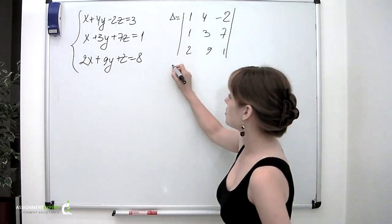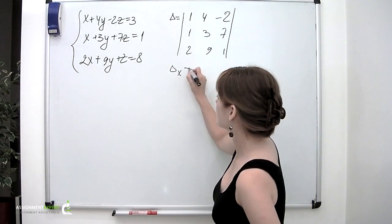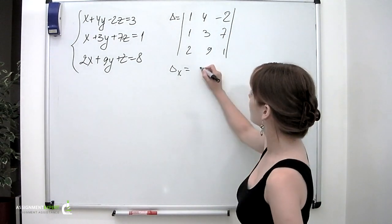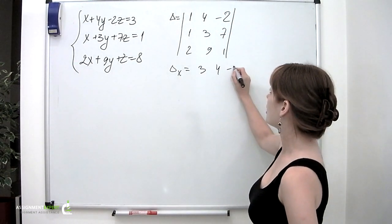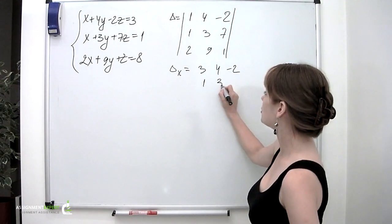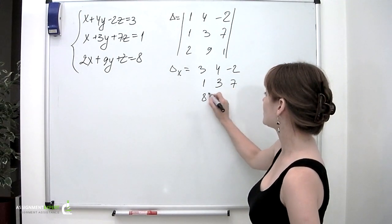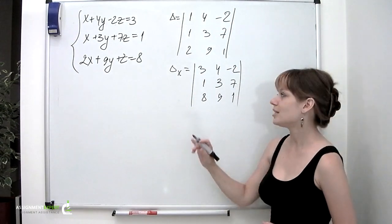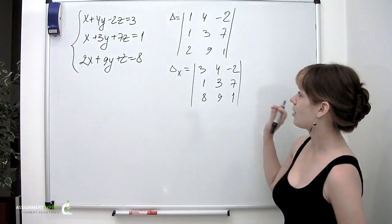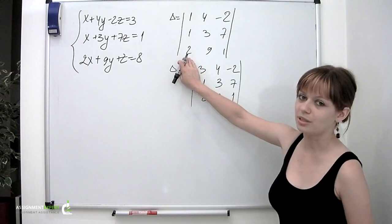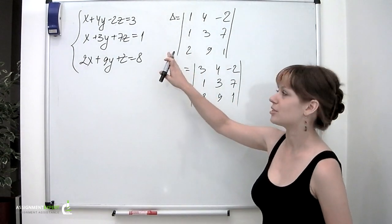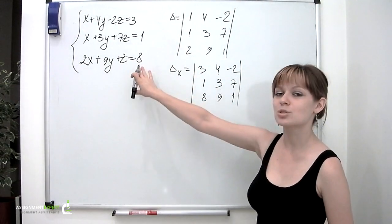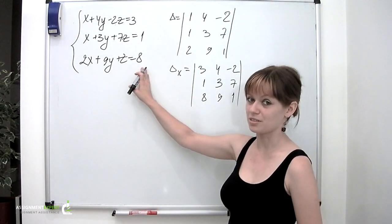Let delta_x be the determinant formed by replacing the first column of delta with the column of constants from the right side of our system. Delta_x has entries: 3, 4, minus 2 in the first row; 1, 3, 7 in the second row; and 8, 9, 1 in the third row.